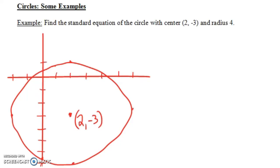In this video we're going to do a couple examples with circles. So the first example says this: find the standard equation of the circle with center (2, -3) and radius 4. So I've drawn that circle right here, it's not a very good picture of a circle, but the center is (2, -3) and the radius is 4.